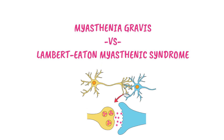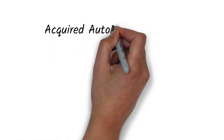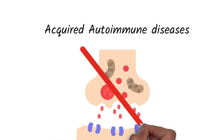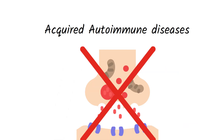Both Myasthenia Gravis and Lambert-Eaton Myasthenic Syndrome are acquired autoimmune diseases characterized by defective neuromuscular transmission. However, these two diseases work on different parts of the neuron and therefore produce different effects.